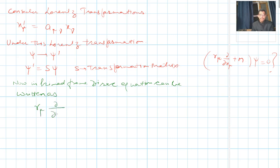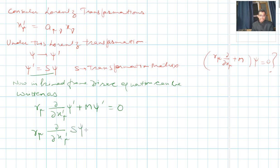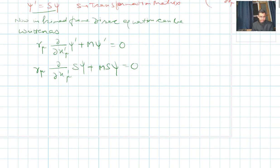In the primed frame, the Dirac equation is written as (γμ ∂/∂x'μ + m)ψ' = 0. Substituting ψ' = Sψ gives γμ ∂/∂x'μ (Sψ) + m(Sψ) = 0. Since S can be taken outside the derivative, this becomes γμ S ∂/∂x'μ ψ + mSψ = 0.